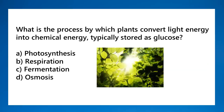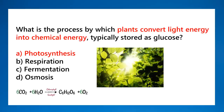What is the process by which plants convert light energy into chemical energy stored as glucose? That is photosynthesis. Memorize the chemical equation: 6CO2 + 6H2O (with sunlight and chlorophyll as catalysts) yields glucose and oxygen. Chlorophyll is the green pigment of plants. The end products are glucose and oxygen.